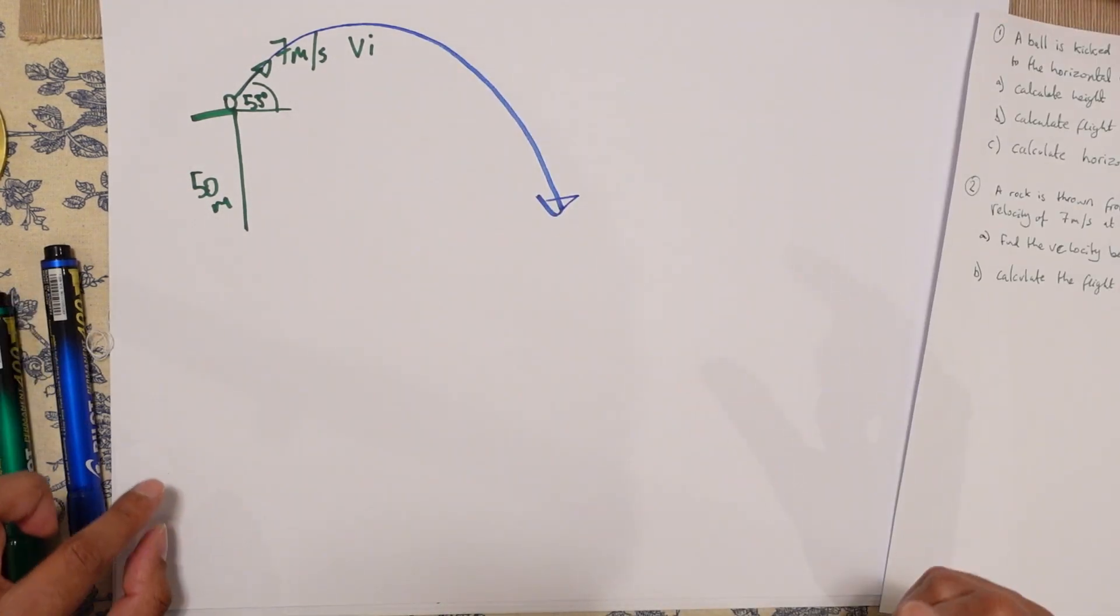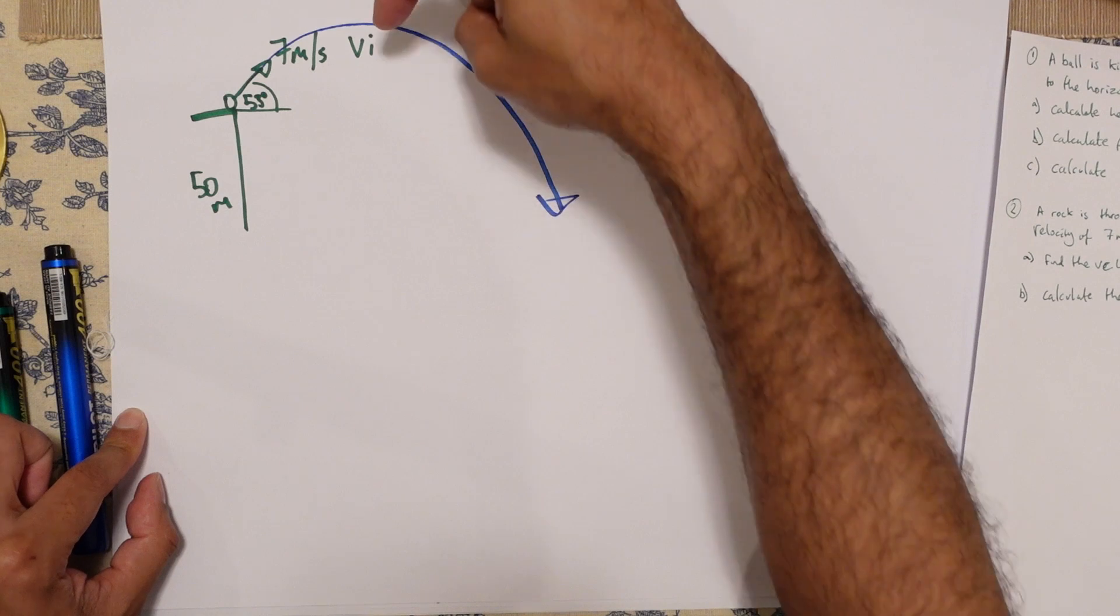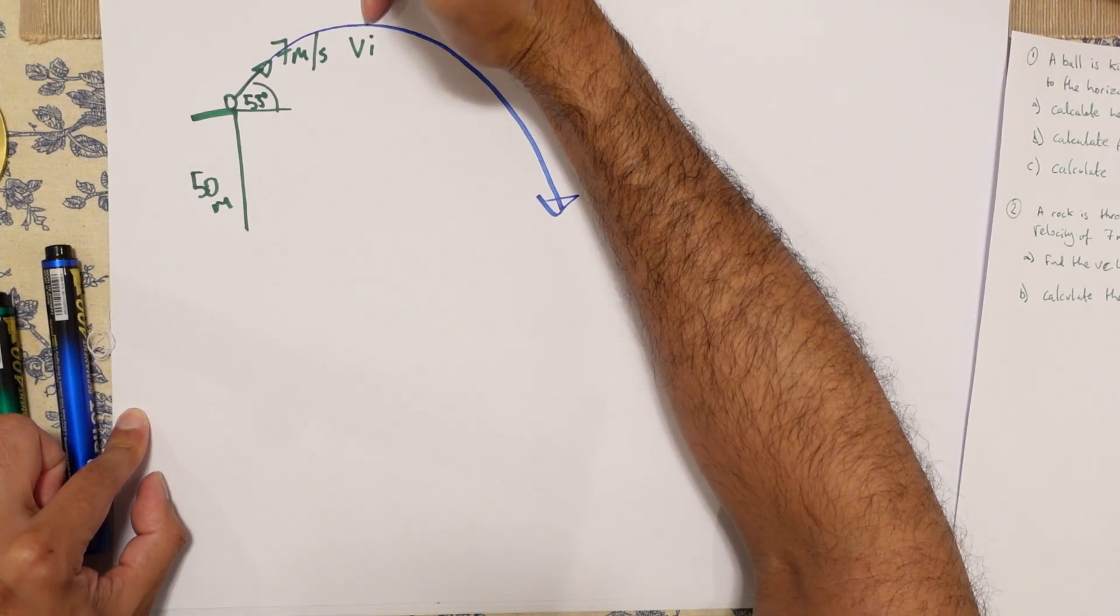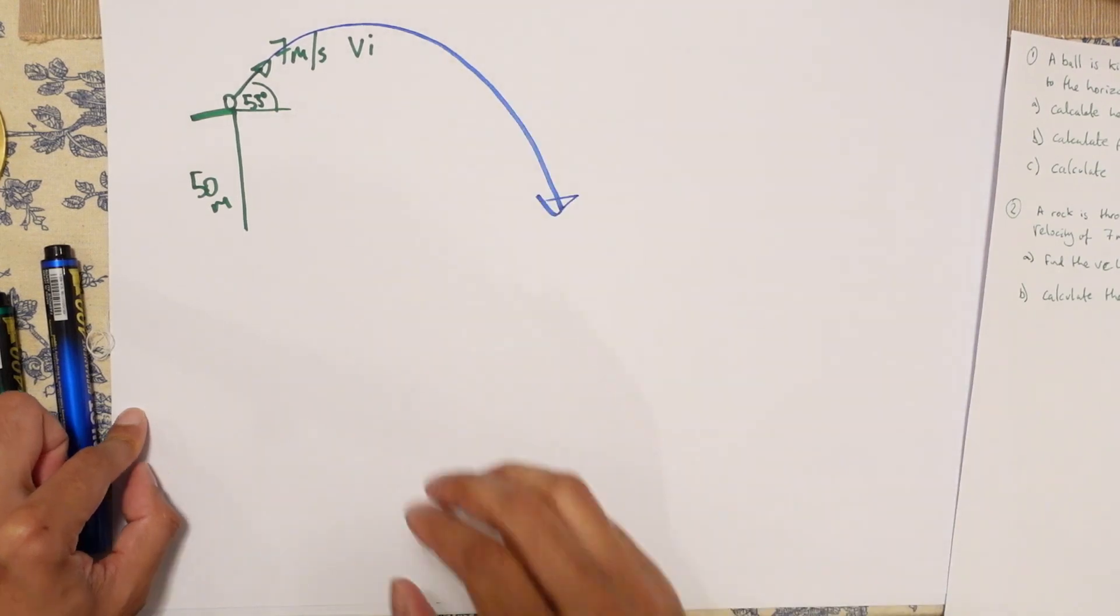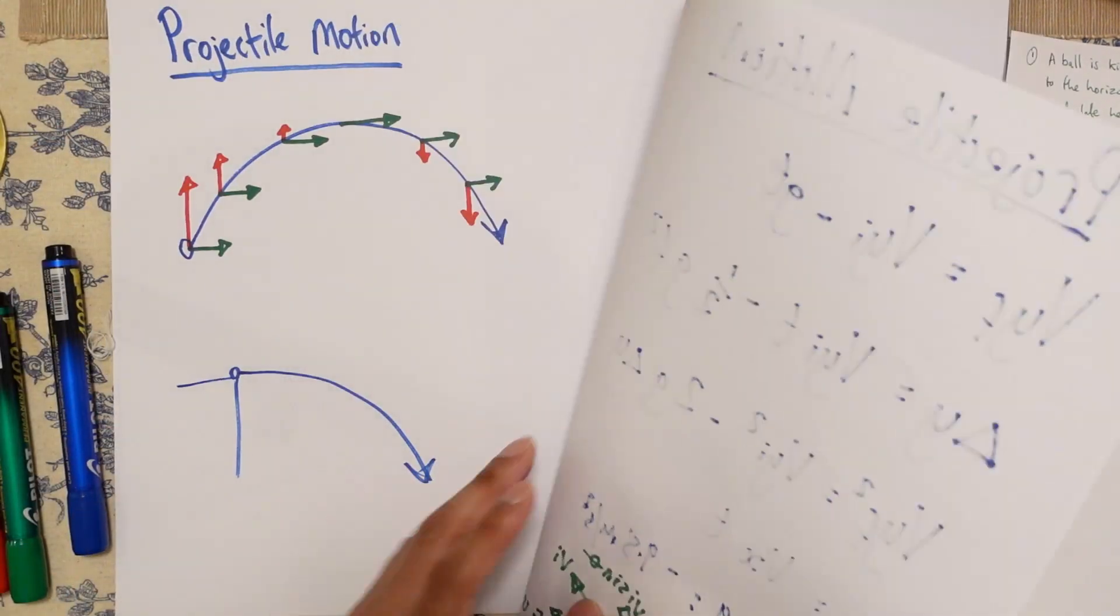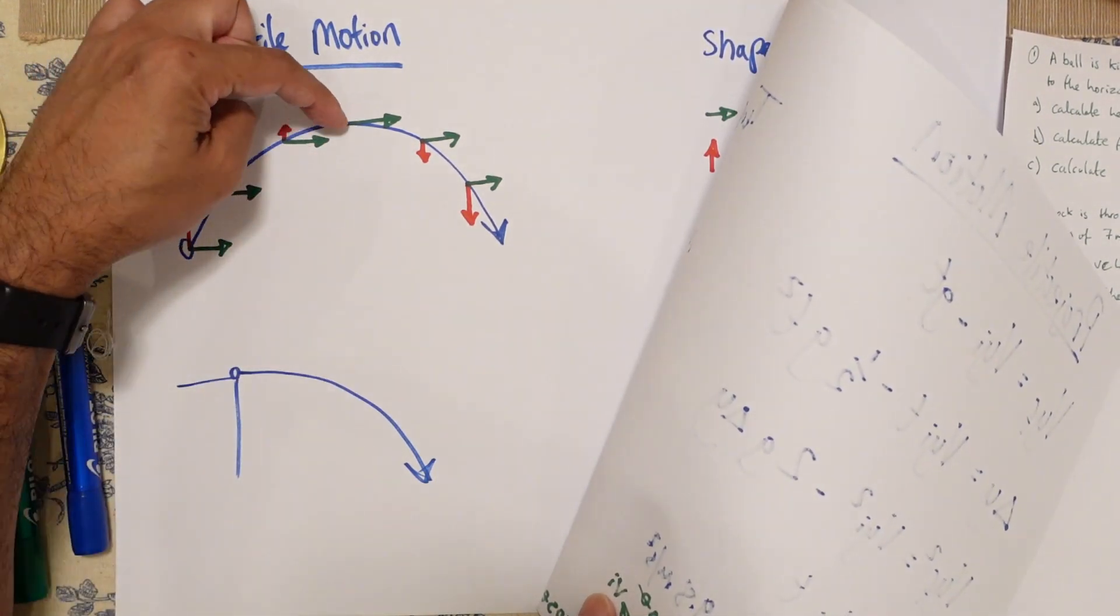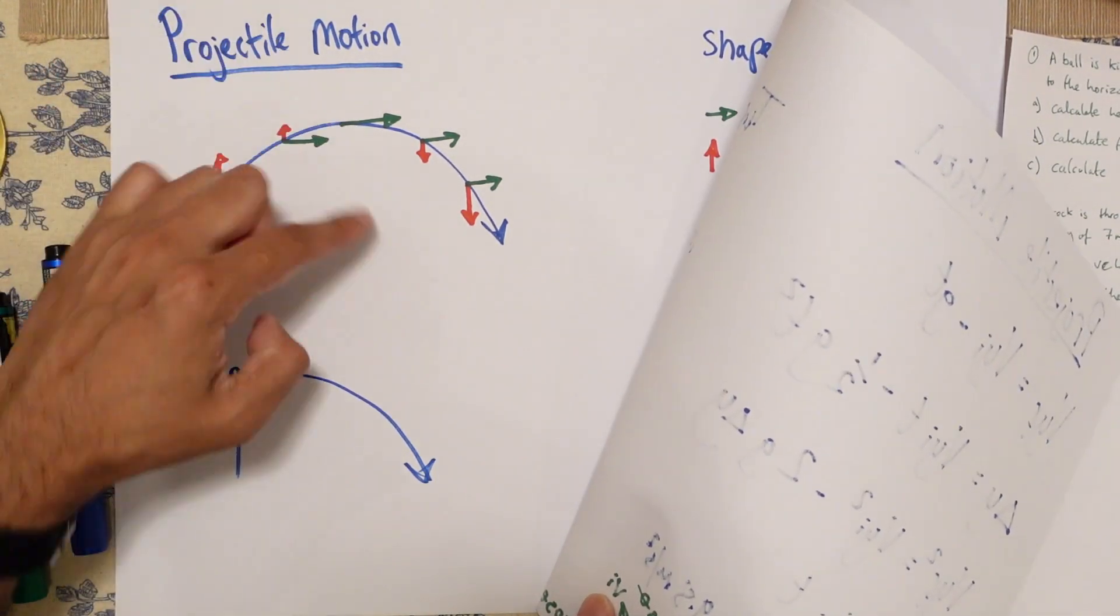One fundamental thing that we need to know here is that the velocity at the very top, the Y velocity is zero. The reason for that is because at the very peak, it basically stops going up and it starts to go down.